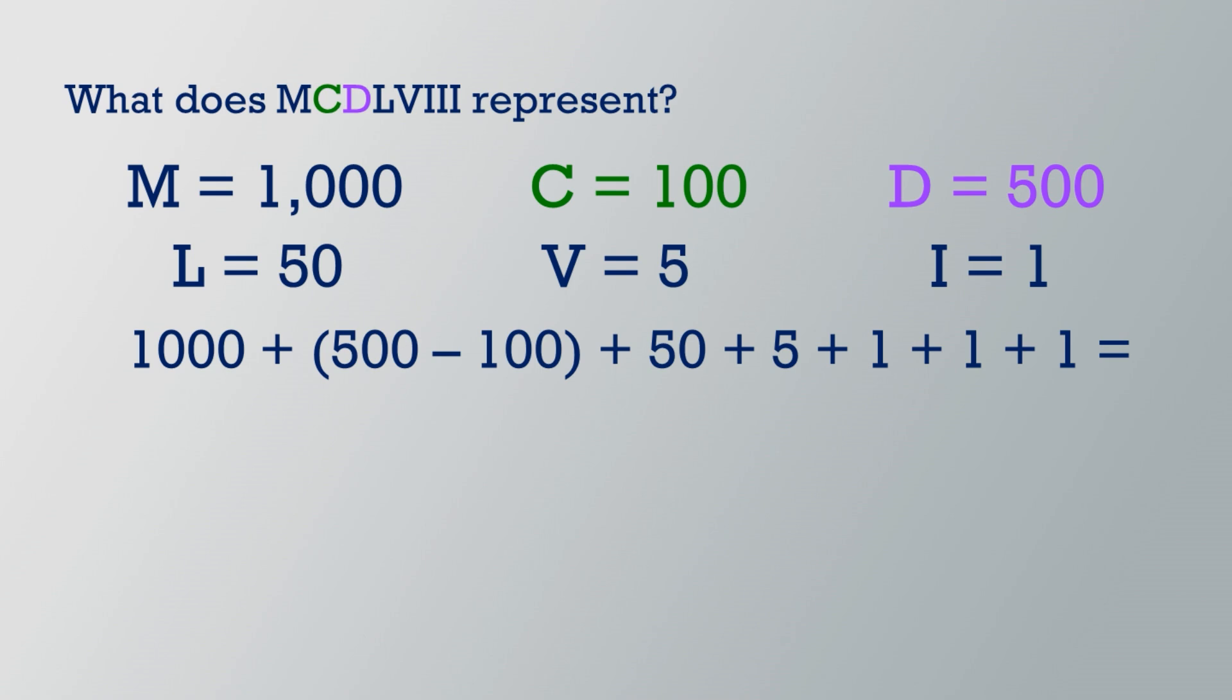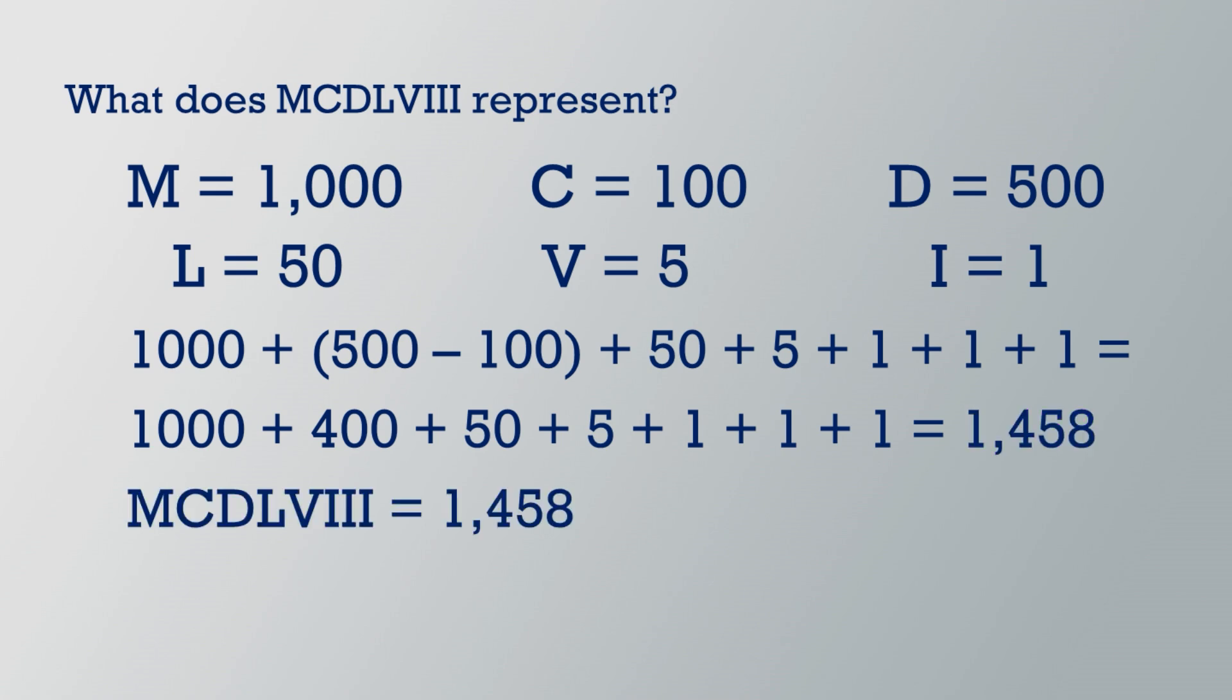Now we simplify inside the parentheses, 500 minus 100 equals 400, and we add 1,000 plus 400 plus 50 plus 5 plus 1 plus 1 plus 1 equals 1458. So, MCDLVIII equals 1458.